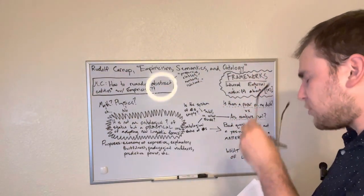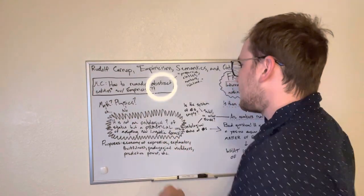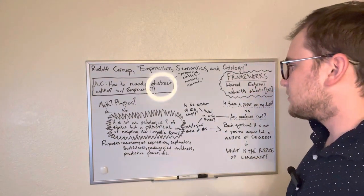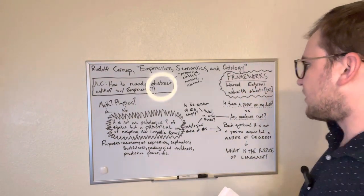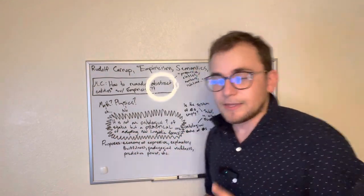Now, what Carnap's ultimate claim is, to kind of end and round out this paper, is that it is not an ontological question of the status of numbers. But rather, a practical one of adopting new linguistic forms.